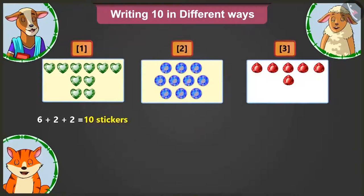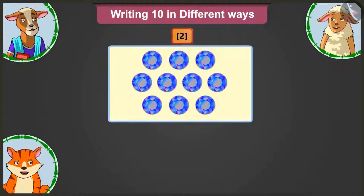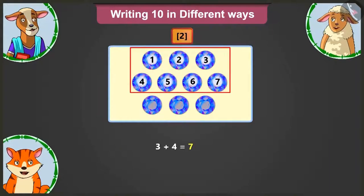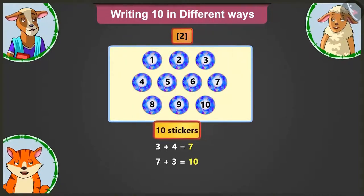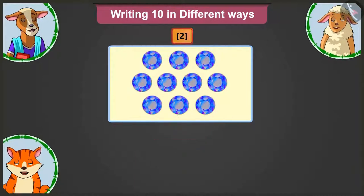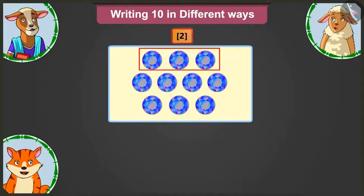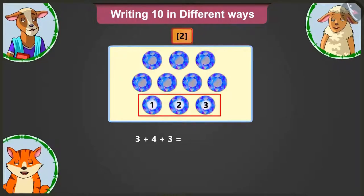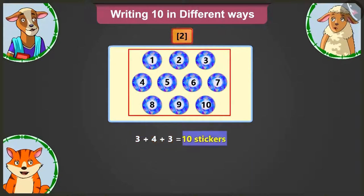Okay, Lily, now tell me how many stickers in total are there on the second card? Adding four to three gives seven. Adding three to seven gives ten. So, this has ten stickers in total. Well done, Lily. Now, tell me how will we write the sum of ten here? On the second card, there are three in the first row, four in the second row and three stickers in the third row. So, here we will write three plus four plus three equals ten stickers.